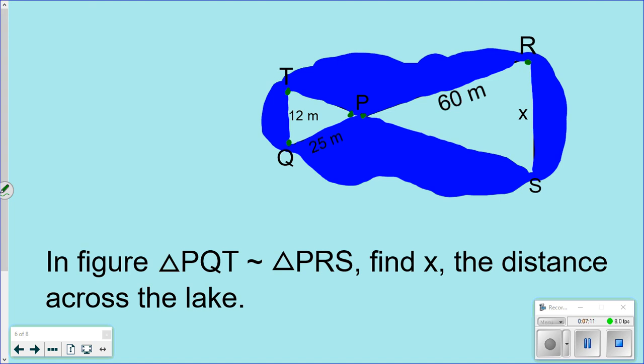So imagine it like this. This is my big one now. So it would be P. And then Q would be R. And then S. So that's how it would look if you'd give it like a whole turn. That's how it would look because they're corresponding to find the distance across the lake.